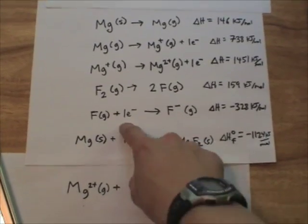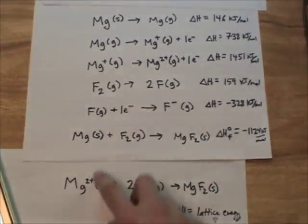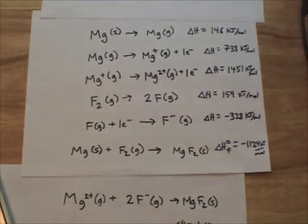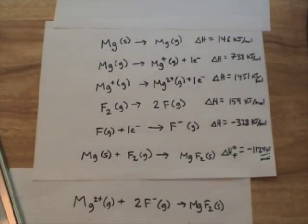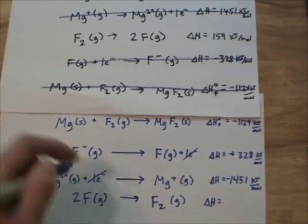Now we want to get the fluoride. We've already got the fluoride anion. Remember, we flipped it. Magnesium cation, we flipped it. And then that one, we know we're going to keep the same. So I'm going to redraw those and then see what we need to do with the other equations.